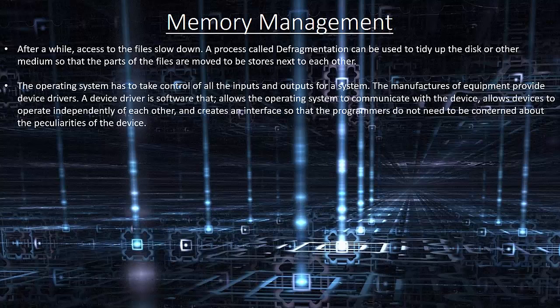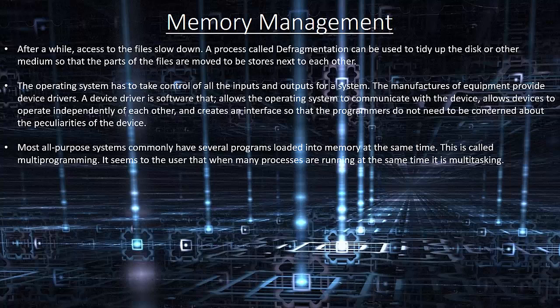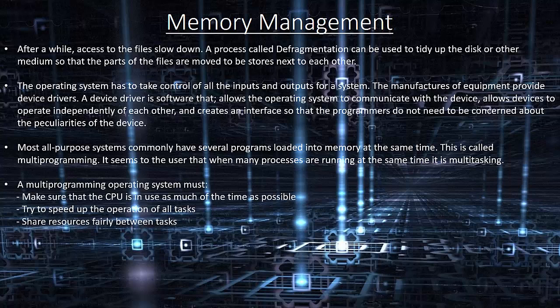The operating system takes control of all the inputs and outputs for a system. Manufacturers of equipment provide device drivers. A device driver is software that allows the operating system to communicate with the device, allows devices to operate independently of each other, and creates an interface so that programmers do not need to be concerned about the peculiarities of the device. Most all-purpose systems commonly have several programs loaded into memory at the same time; this is called multi-programming. It seems to the user that many processes are running at the same time — this is multitasking. A multi-programming operating system makes sure the CPU is in use as much of the time as possible, tries to speed up the operation of all tasks, and shares resources fairly.